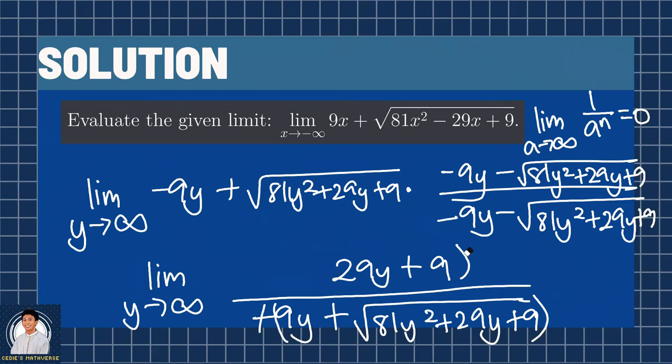In this case, we can now utilize the limits to infinity. But how? We will multiply 1 over y to both numerator and denominator. Multiplying 1 over y here gives us 29, and the denominator of this one becomes y. So we have 9 over y.